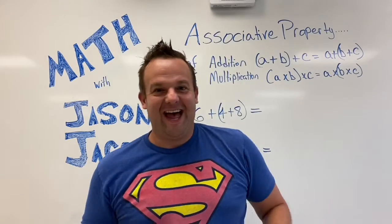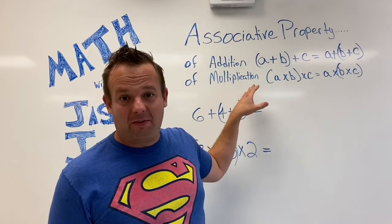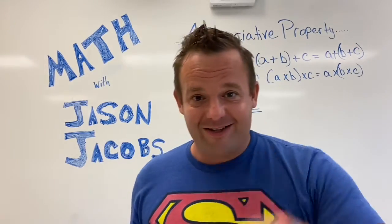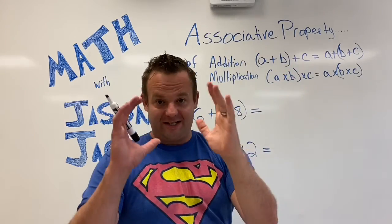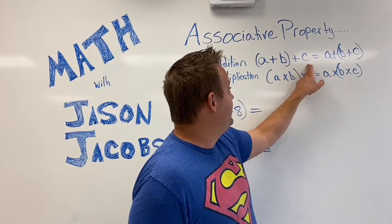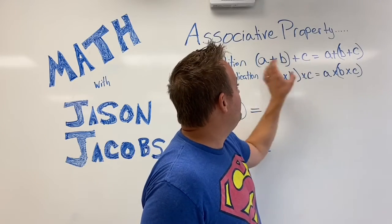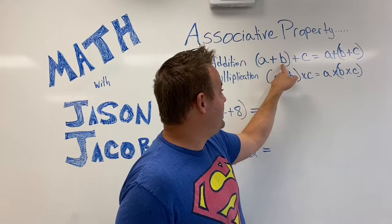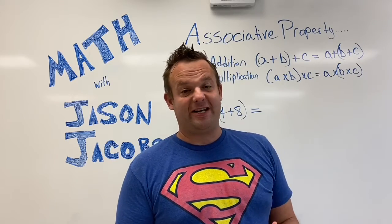Associative Property. We're going to learn all about the Associative Property of Addition and the Associative Property of Multiplication. My name is Jason Jacobs; I'm going to be your math tutor today. The Associative Property of Addition says: when you have the quantity of A plus B — quantity means there are parentheses, or grouping symbols — plus C, as long as you keep these addends in the same order and it's all addition, you can move the grouping symbol. So the quantity A plus B, plus C, is the same as A plus the quantity B plus C.